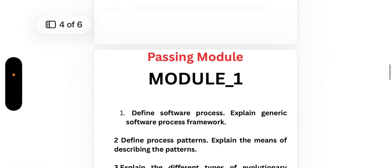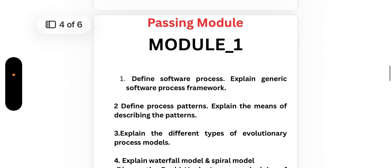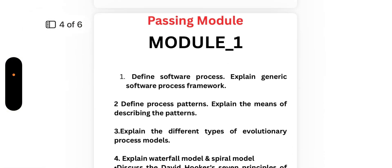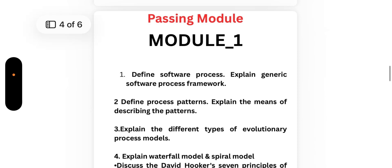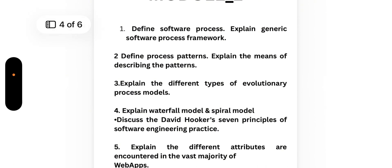In Module 1, focus on these important questions: First, define software process and explain the generic software process framework. Second, define process patterns and explain the means of describing those patterns. Third, explain the different types of evolutionary process models. Fourth, explain the waterfall model and spiral model, and discuss David Hooker's seven principles of software engineering practice.